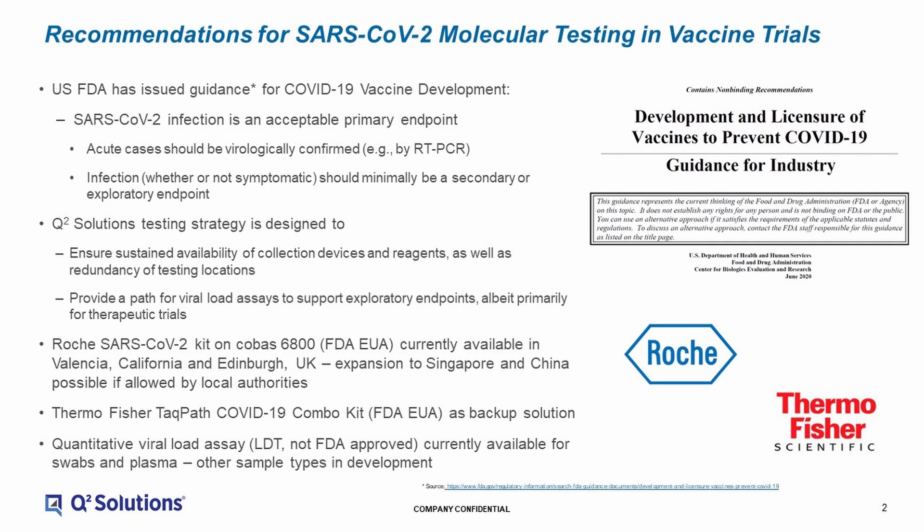In response to this, our testing strategy for vaccine trials includes a couple of key points. First, we want to ensure that we have sustained availability of not only the test itself, the reagents, and the devices necessary, but also a means to collect and preserve that sample. We've already worked out all of the logistics for collecting those samples, transporting them within stability, etc. We also want to make sure that we have a redundancy in our testing locations. Second, we do want to have a path for viral load assays to support exploratory endpoints, although we typically see the need for viral load assays more in therapeutic trials than in vaccine trials.